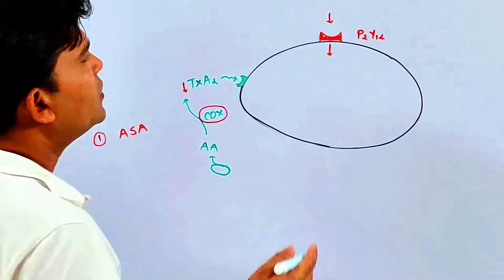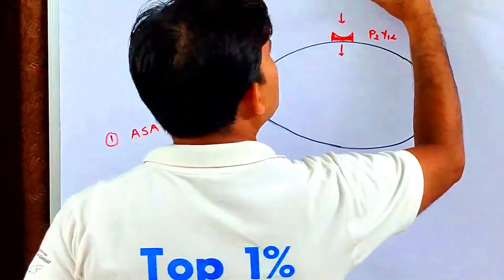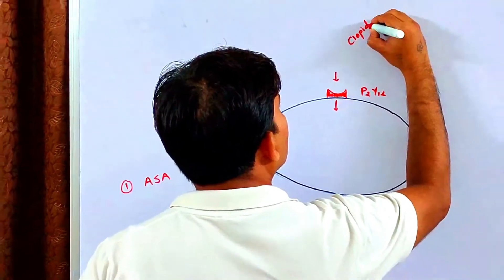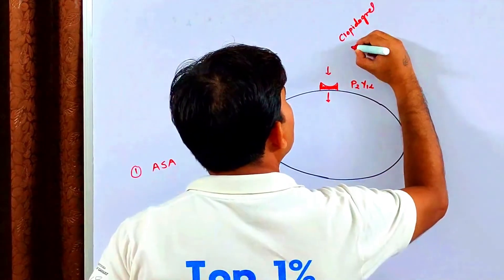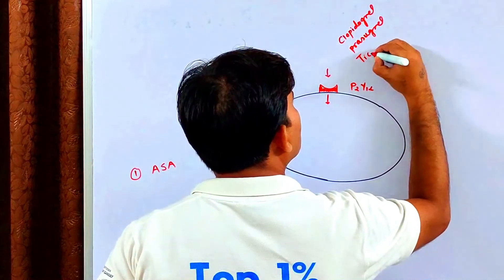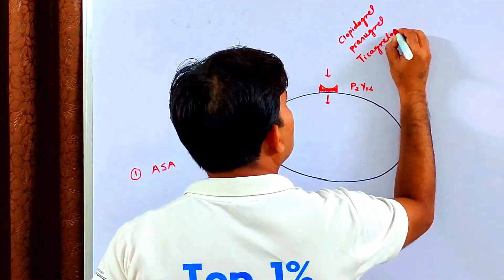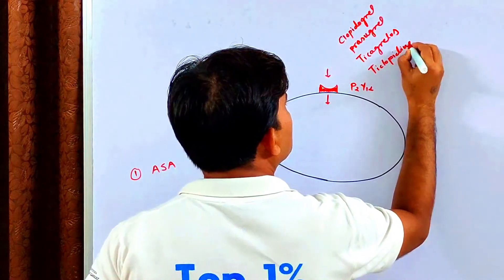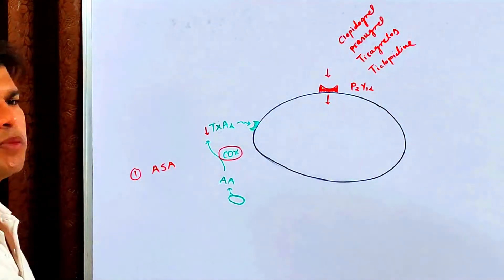So a group of drugs - clopidogrel, prasugrel, and ticagrelor - these are the P2Y12 receptor blockers, right?